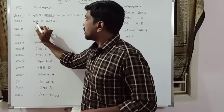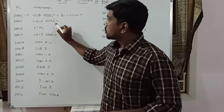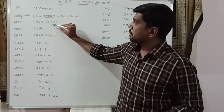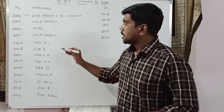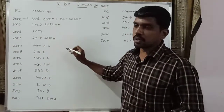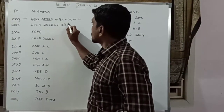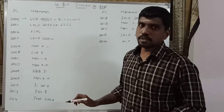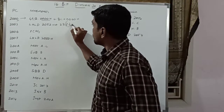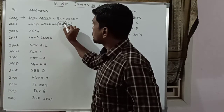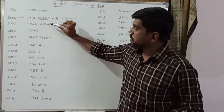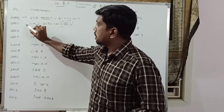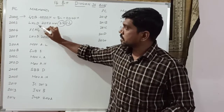The next instruction at 2003H is LHLD 2052H. This is a memory location. Whatever content is present in this memory location, that content is transferred to the L register. The content of the next successive memory location is transferred to the H register. Let us consider one 16-bit value for this memory location — the 16-bit value is 2222H. So this value is transferred to the L register and H register. Memory location 2052H carries 22H, and the next location also carries 22H. After execution of this instruction, first data is loaded to the HL register pair. It is also a 3-byte instruction — you need 3 memory locations to execute the instruction.